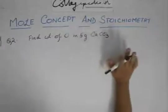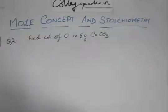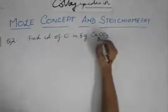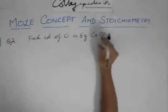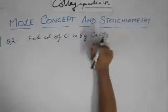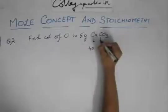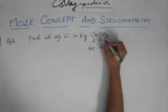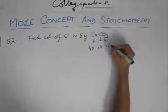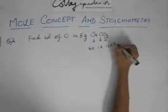For these types of questions—find the weight of oxygen or any type of questions in mole concept and stoichiometry—you need to know the mass numbers of common elements. The mass number of calcium is 40, carbon is 12, and oxygen is 16, which here gets multiplied by 3.